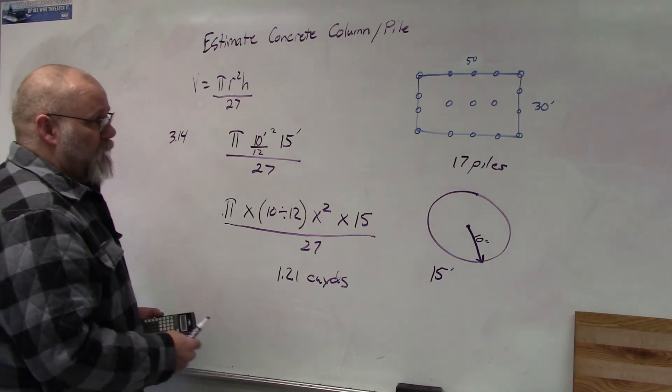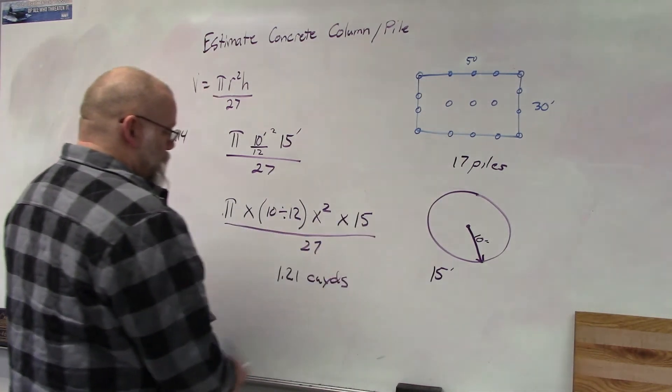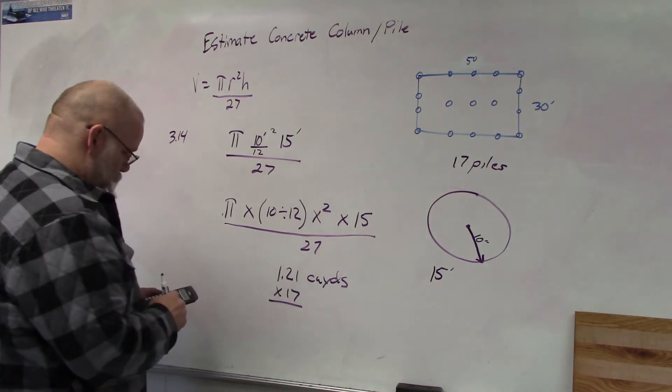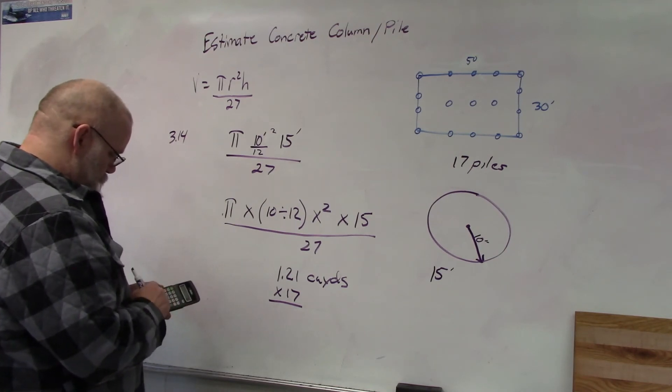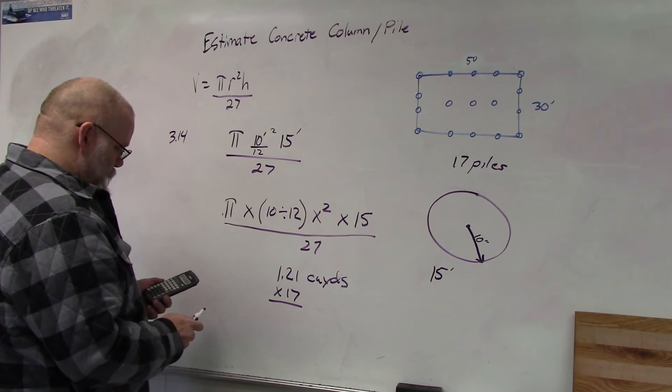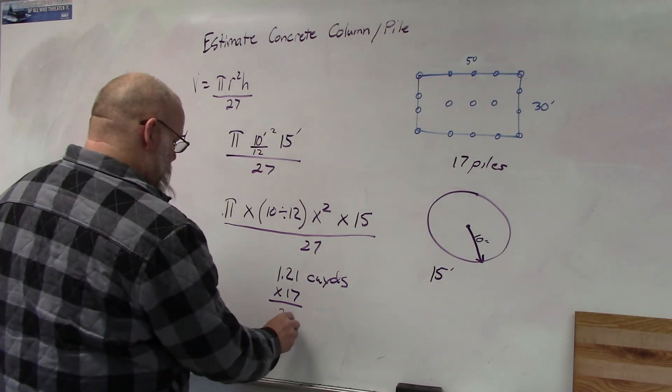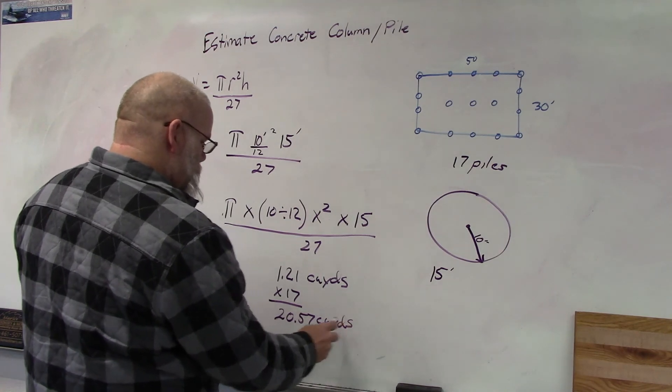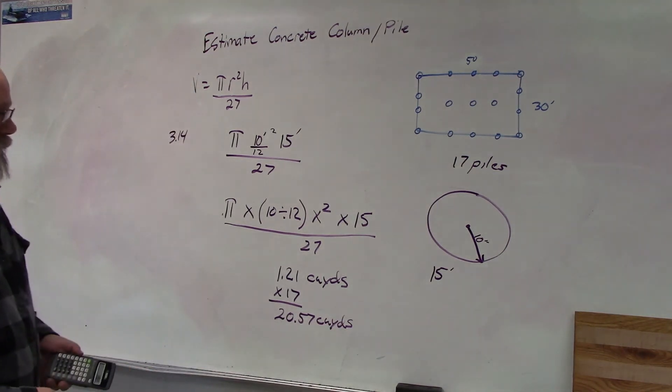So since we have 17 piles, then we would take that number times 17. 1.21 times 17, and we would get 20.57 cubic yards.